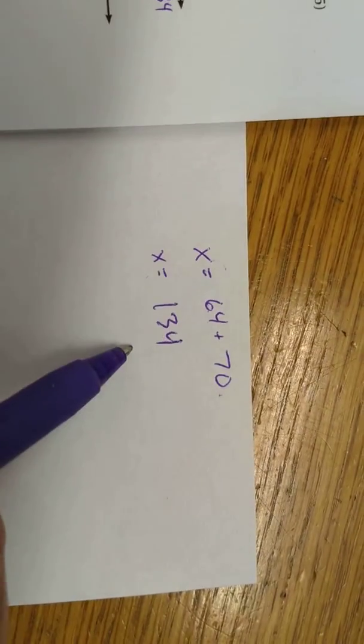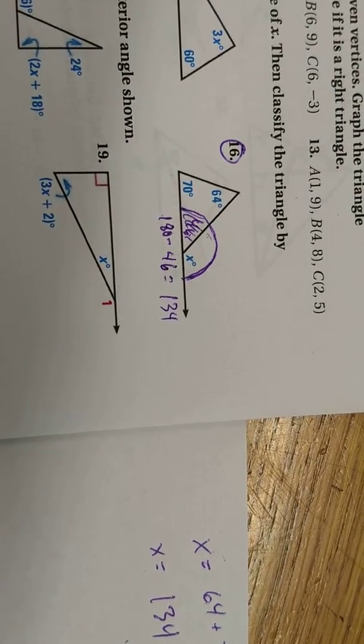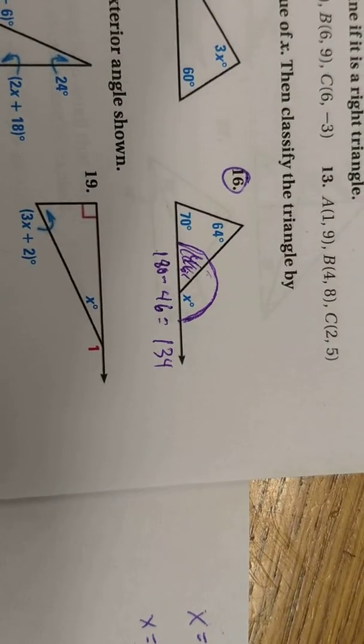That's what we already got here using the exterior angle sum theorem. But you could think it through in terms of the three angles inside the triangle adding up to 180 as well.